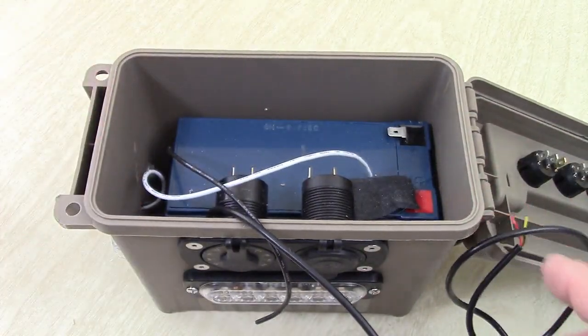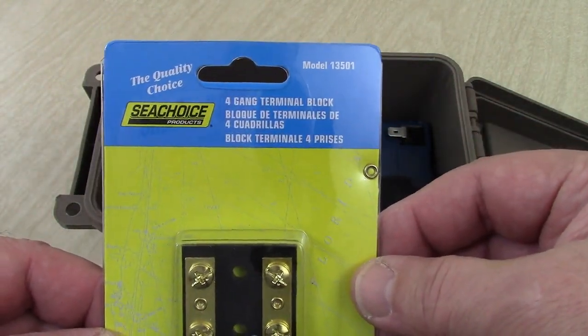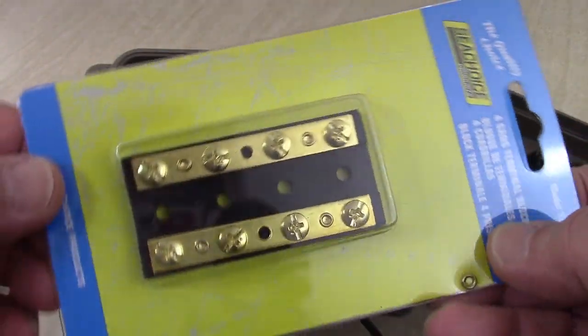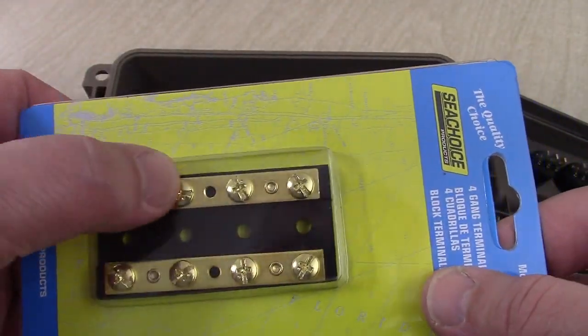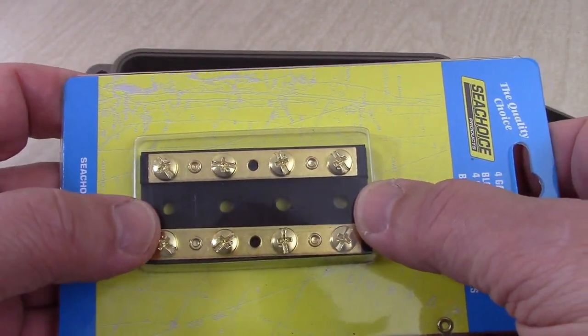I am going to install a four gang negative terminal block, and this is made by C-Choice. As you can see, it's got one, two, three, four on top. It's got four on the bottom. So it's really kind of eight gang.